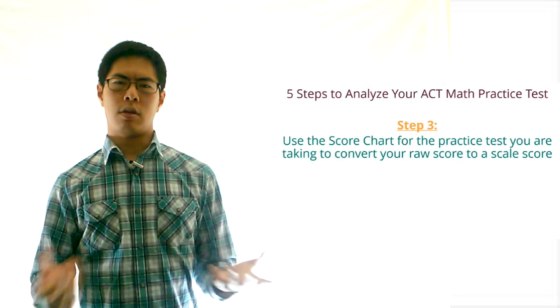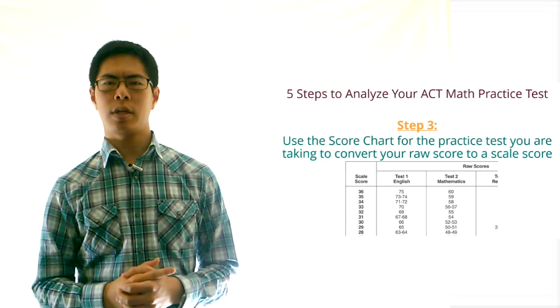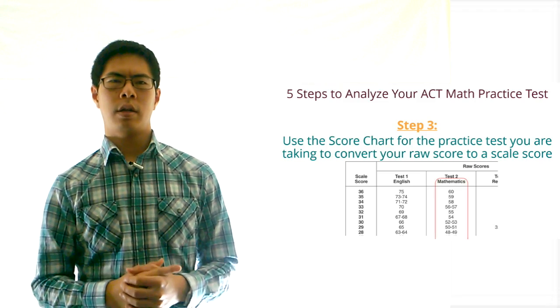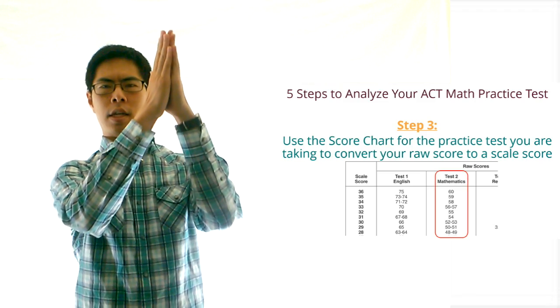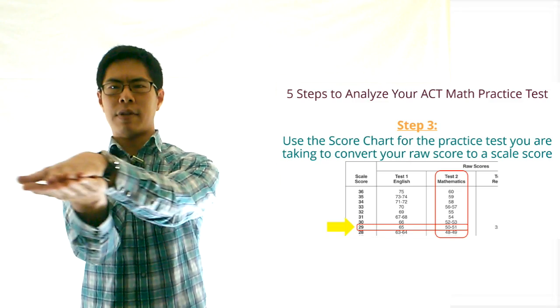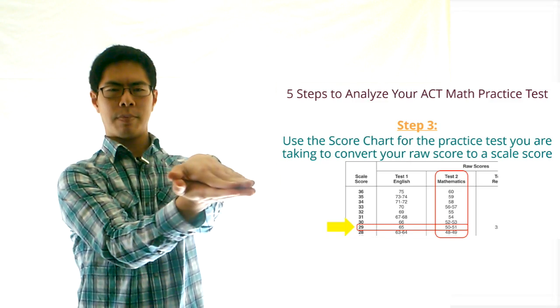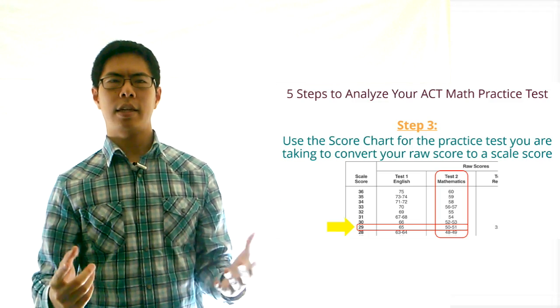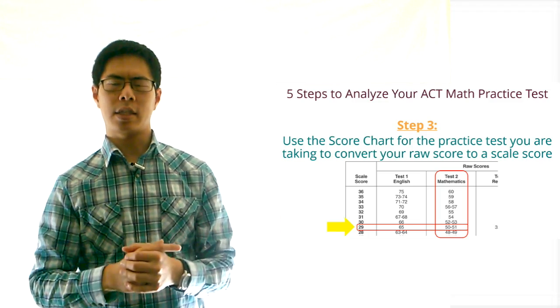Step 3. Use the score chart for the practice test you're using to convert your raw score to a scale score. To use the score chart, first find the column labeled math, second look vertically in the math column to find your raw score, third look horizontally to find the scale score that corresponds to your raw score. Now write down your scale score in the blank labeled scale score. This is the ACT score that you would have gotten for the ACT math section.